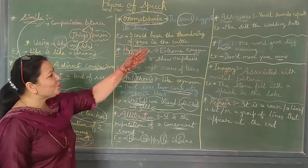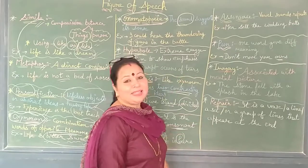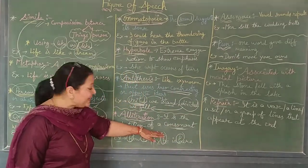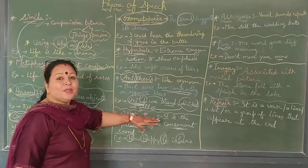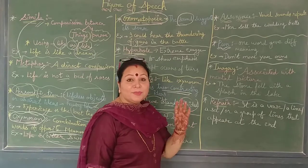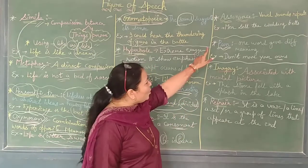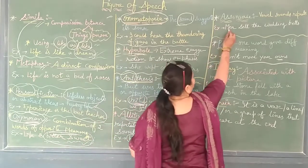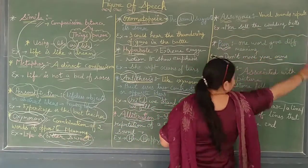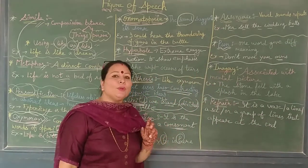Let's move to one more figure of speech: assonance. In alliteration we talked about consonant sounds repeating. But in assonance, it is the vowel sounds that repeat — that is A, E, I, O, U. When we move from alliteration to assonance, we shift from consonant repetition to vowel repetition. Over here there is a repetition of a vowel sound, like the vowel E.